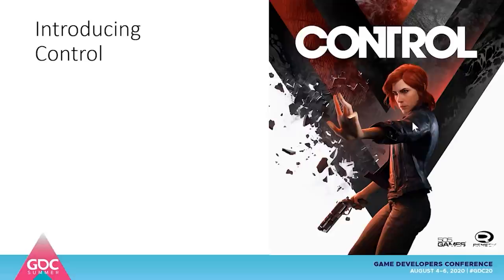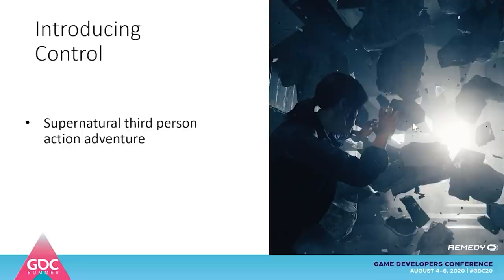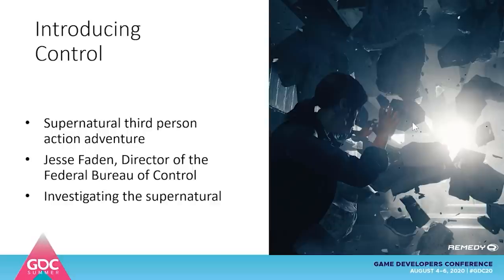Control is a supernatural third-person action adventure. You play as Jesse Faden, director of the Federal Bureau of Control, which you suddenly become right at the beginning of the game, and you take over this government agency that is investigating the supernatural.